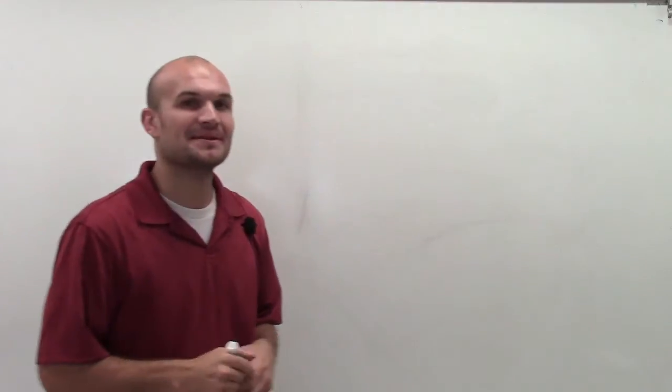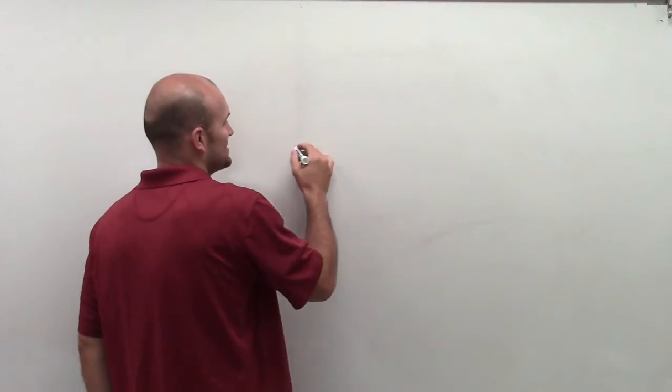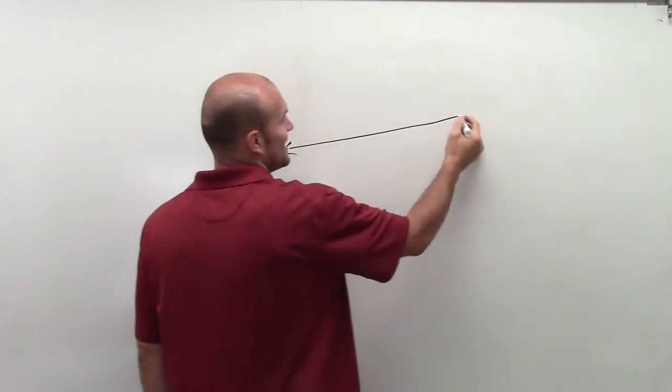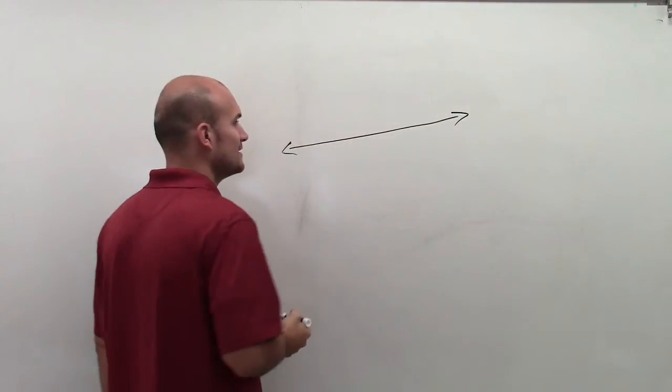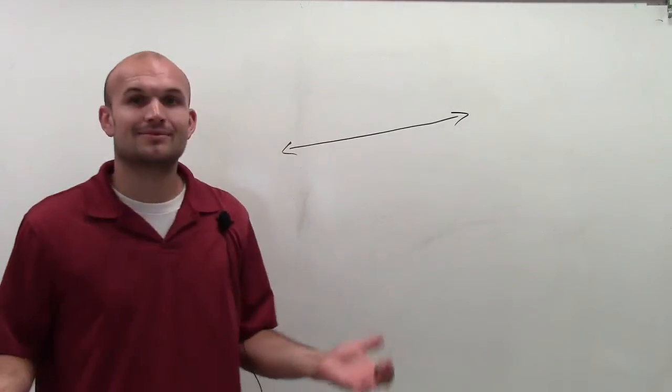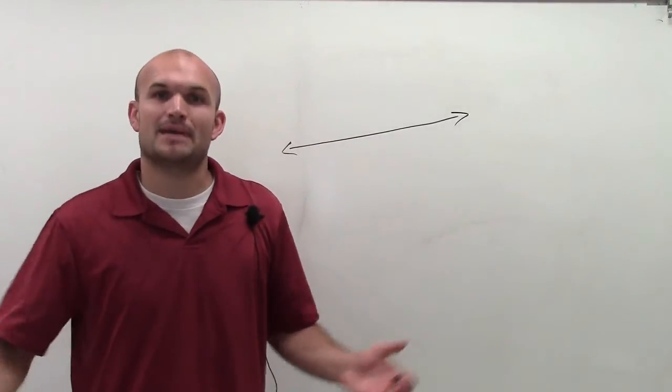All right, so we've talked about lines. When we were talking about lines, we said it was a straight path that contains no end, so it continues infinitely. It also has no thickness. But what a line is contained of is infinitely many points.